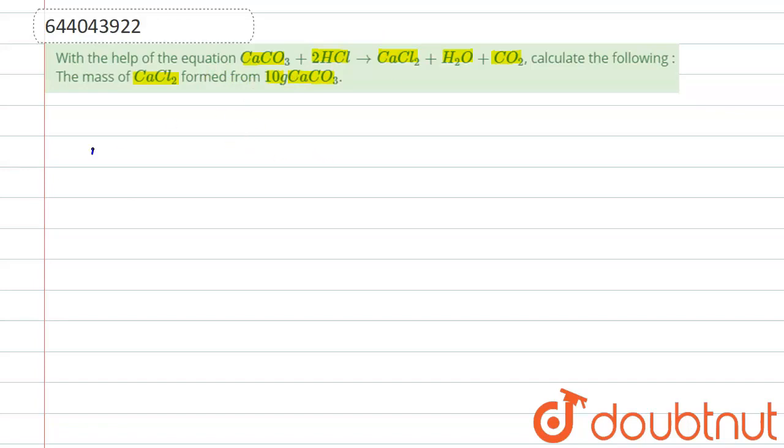So let us write the reaction first. The reaction is we have calcium carbonate CaCO3. It's on addition with 2HCl, this gives calcium chloride CaCl2 plus water plus carbon dioxide. So here we have the reaction.